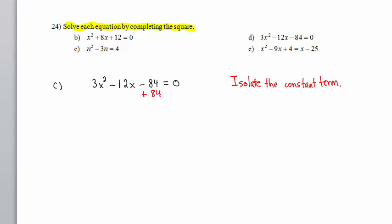Here, we would accomplish this by adding 84 to both sides. We get 3x squared minus 12x equals 84.